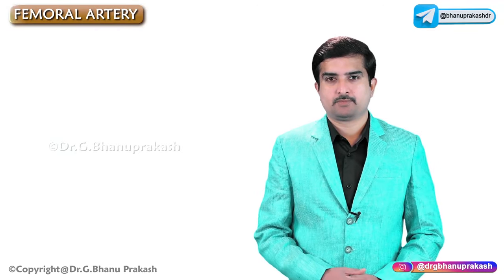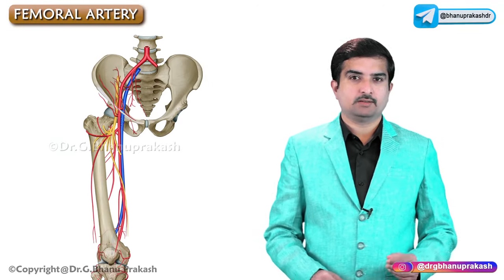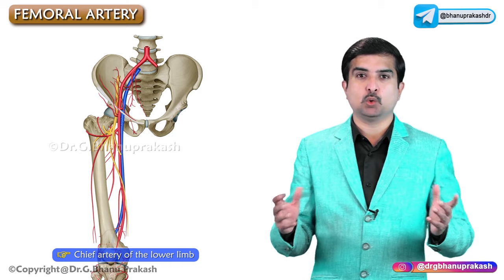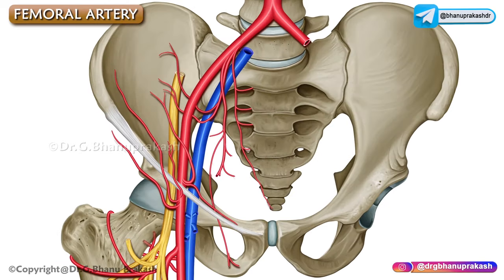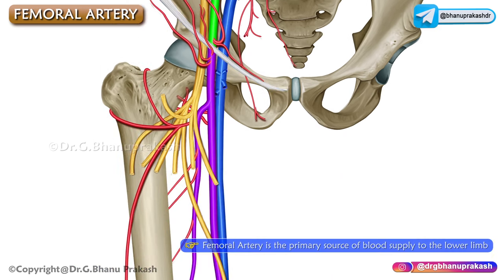Femoral artery. The femoral artery is the chief artery of the lower limb. It is a continuation of the external iliac artery as it passes below the inguinal ligament, and it is the primary source of blood supply to the lower limb.